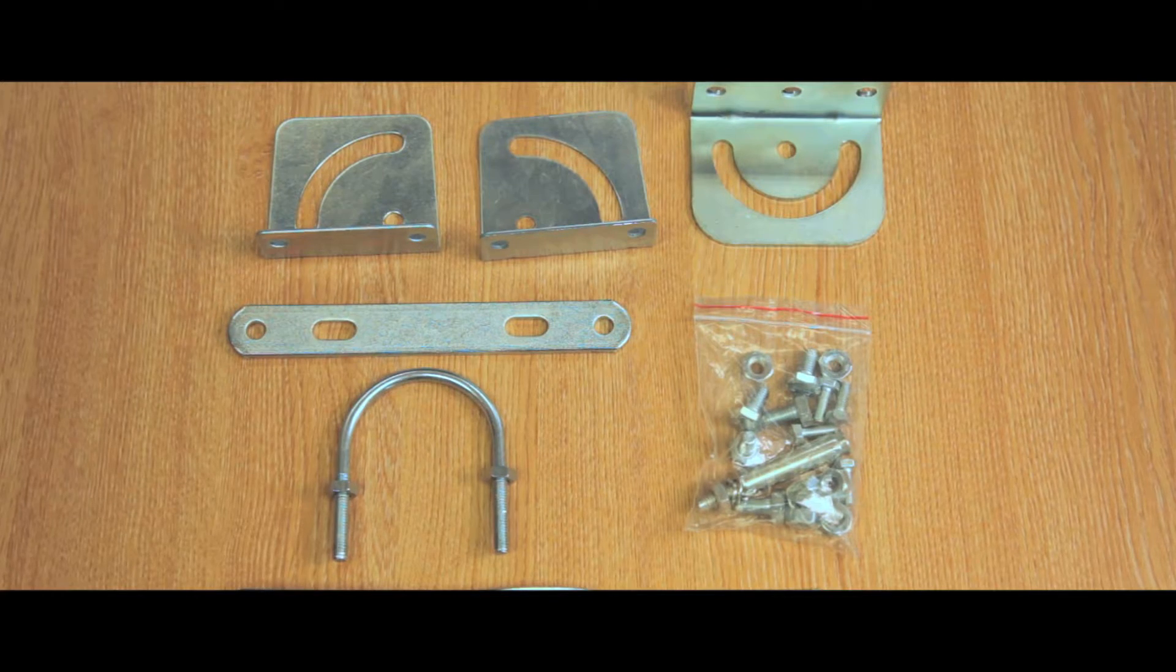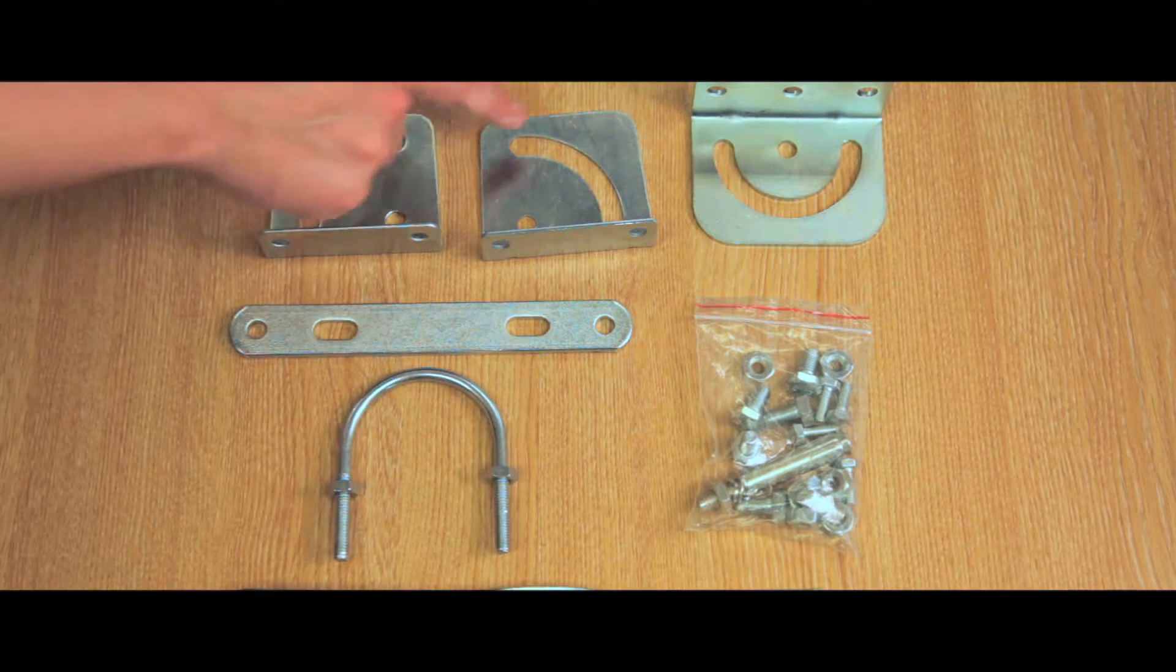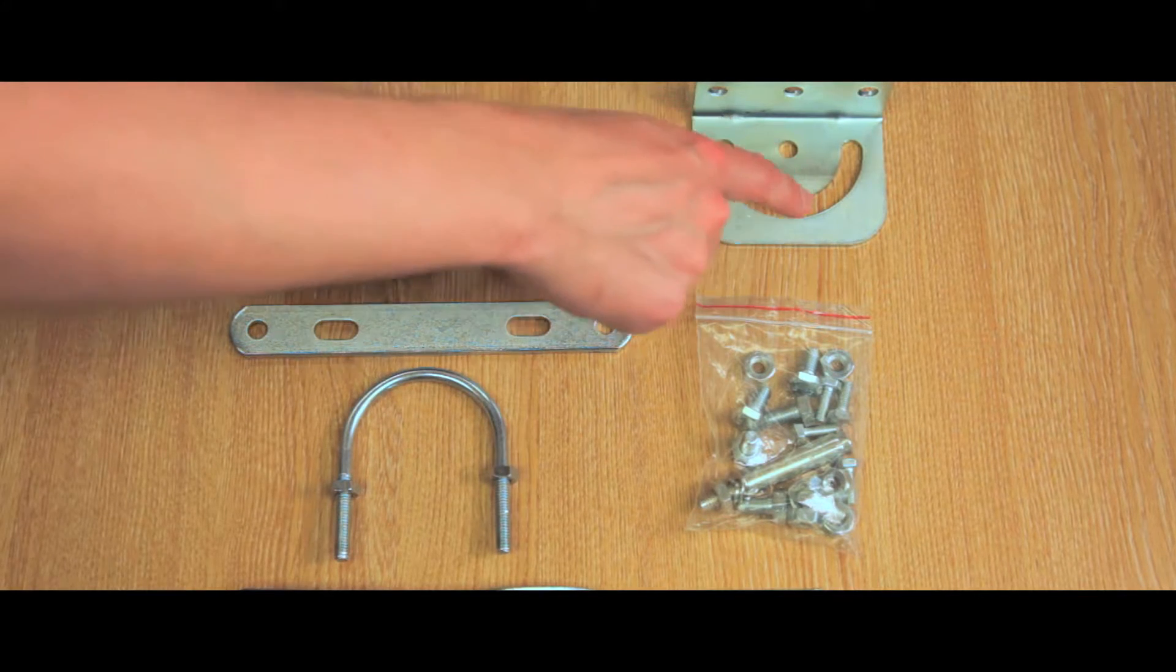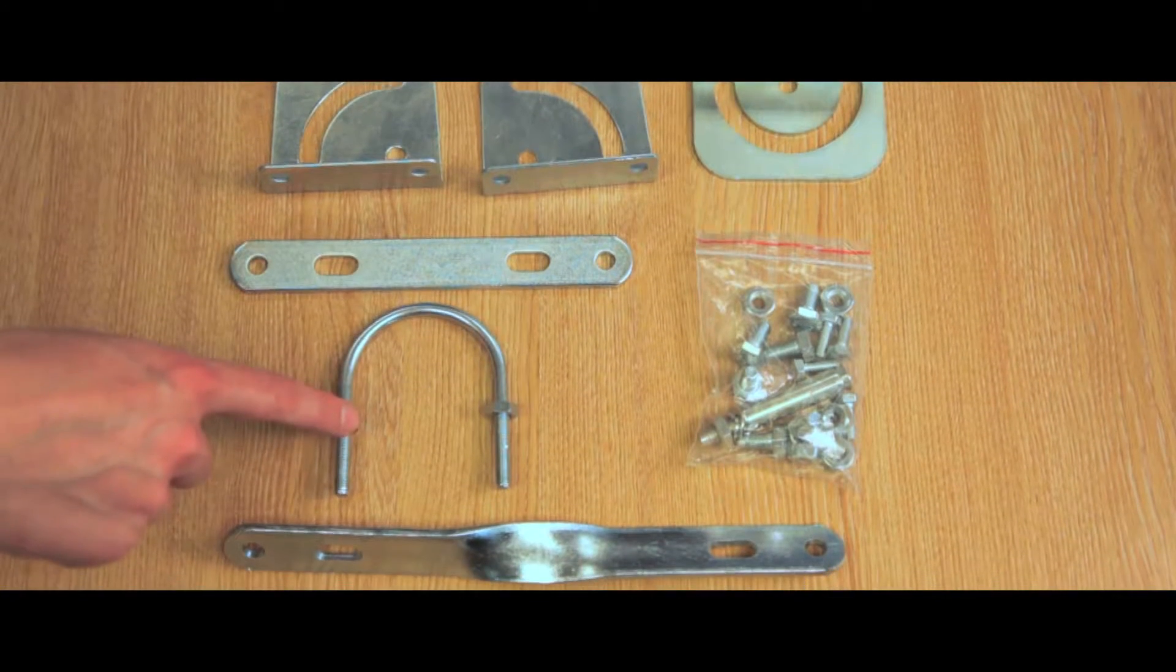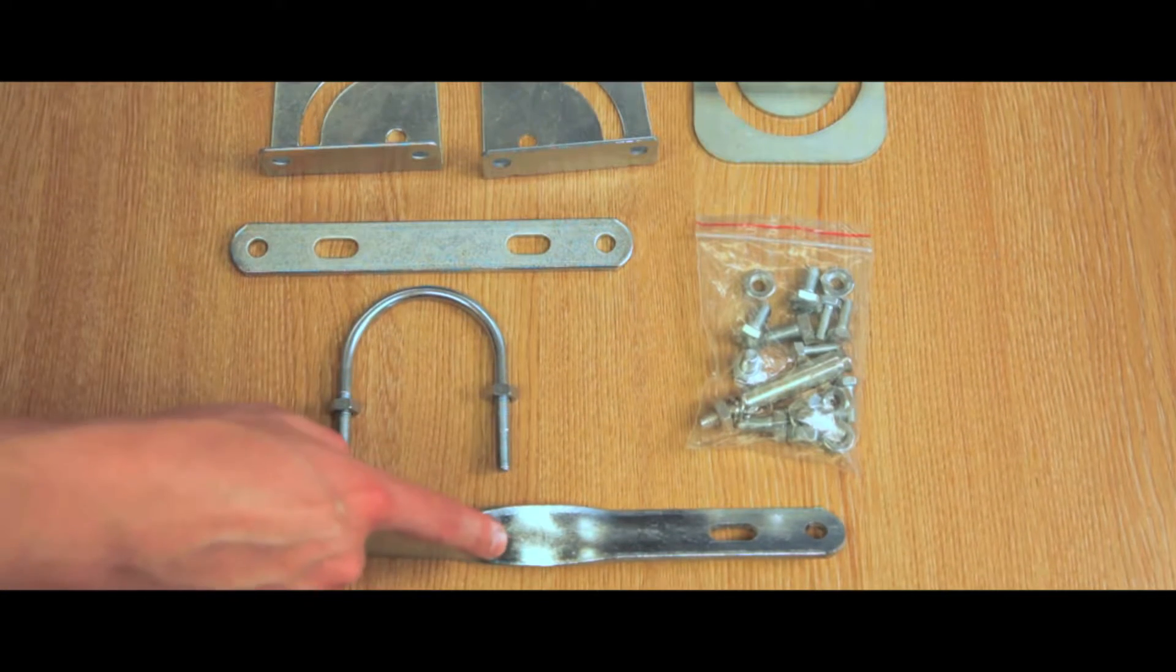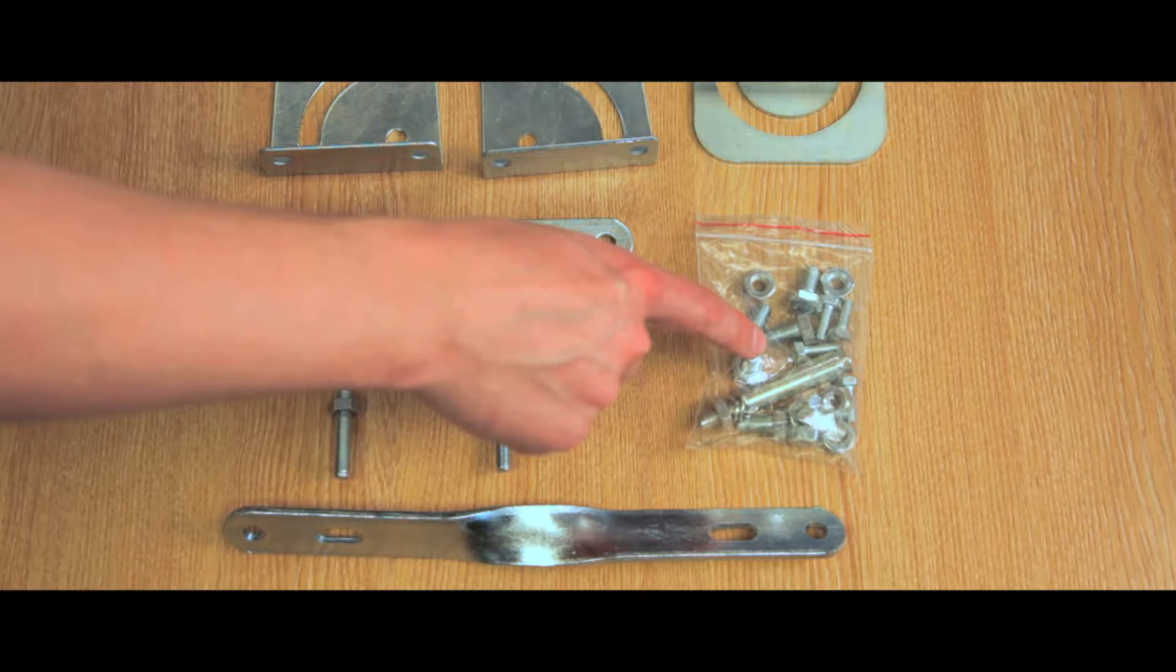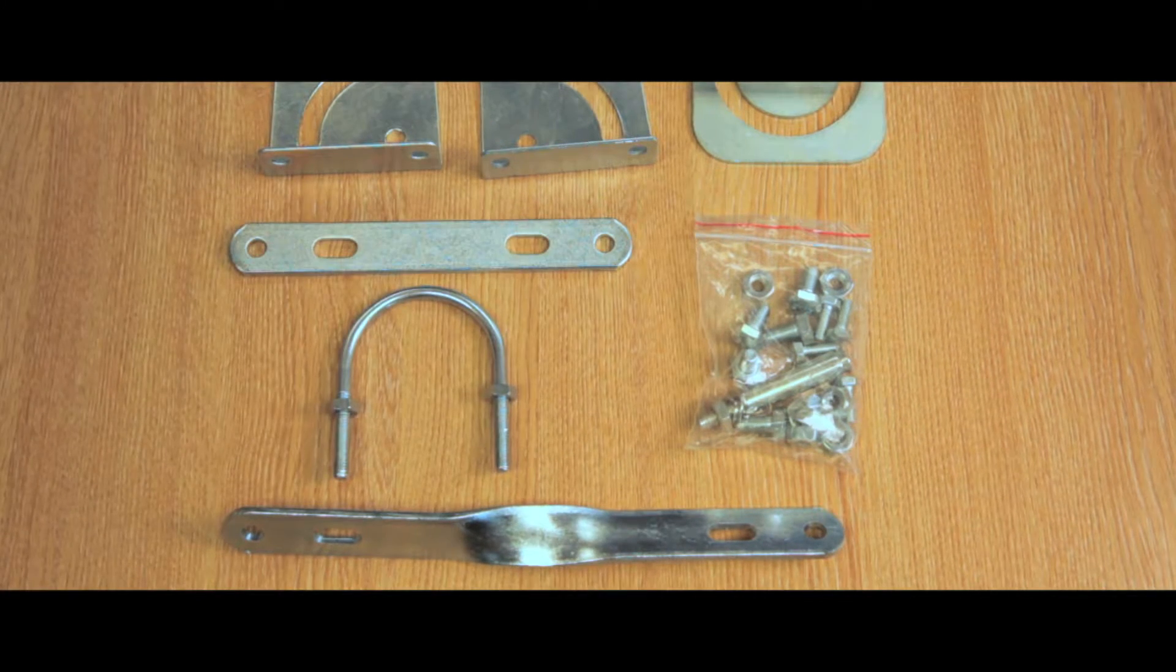You will receive one left L part, one right L part, one wall part, one flat bracket, one U-bolt, one straight bracket, and a bag containing all of the nuts and bolts you will need for installation.